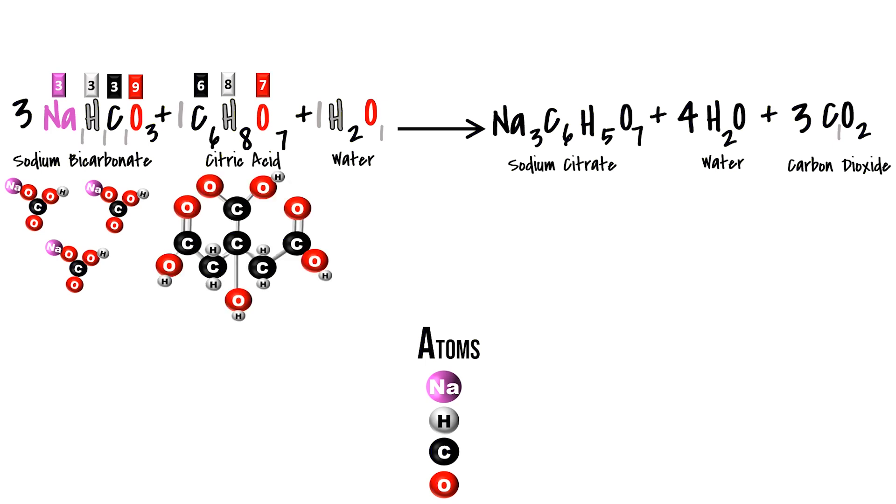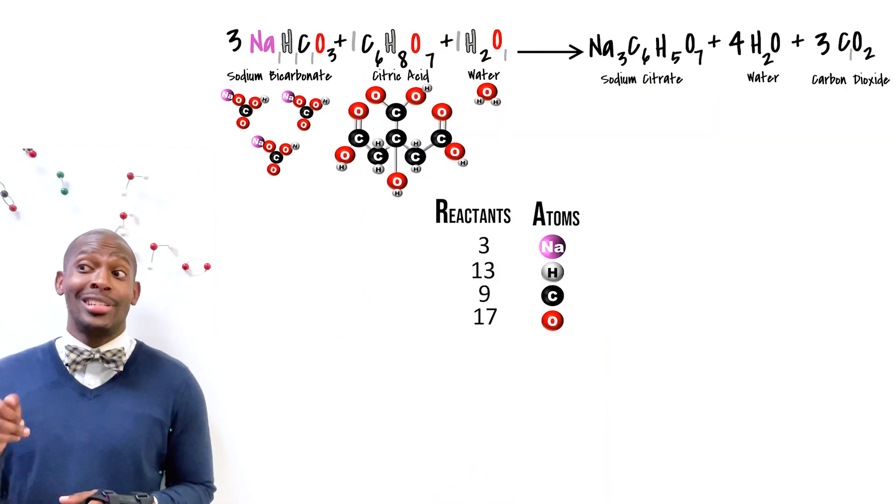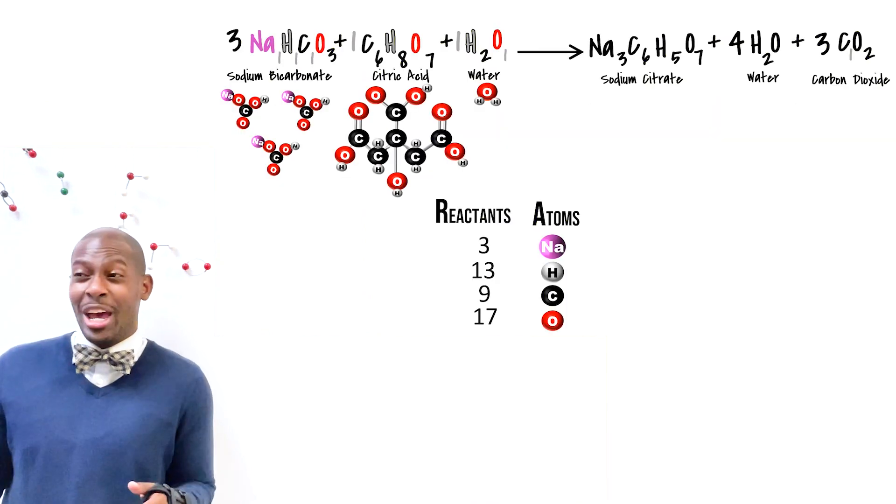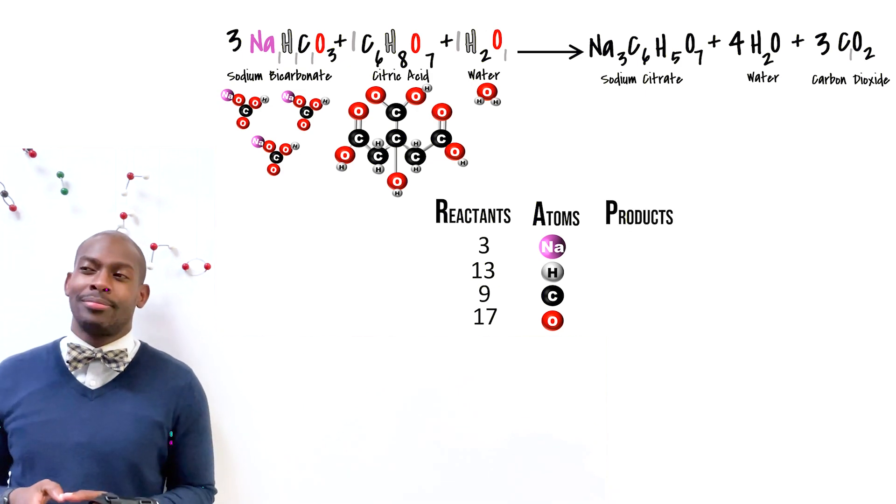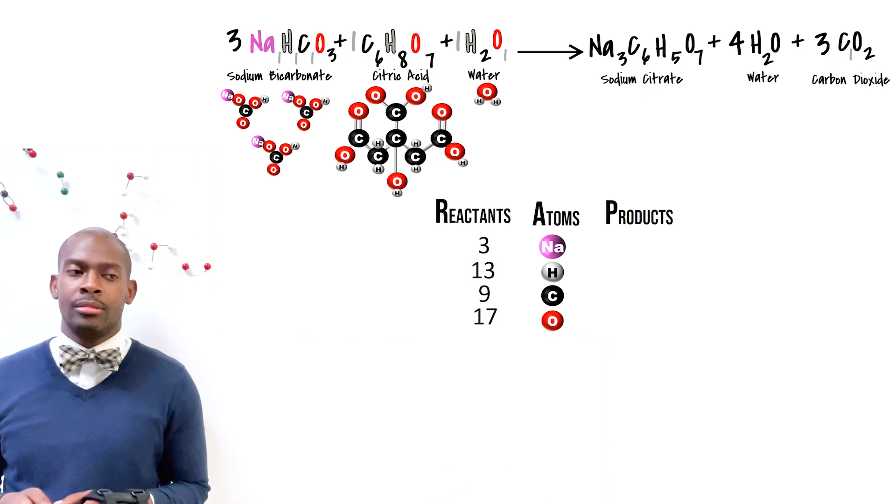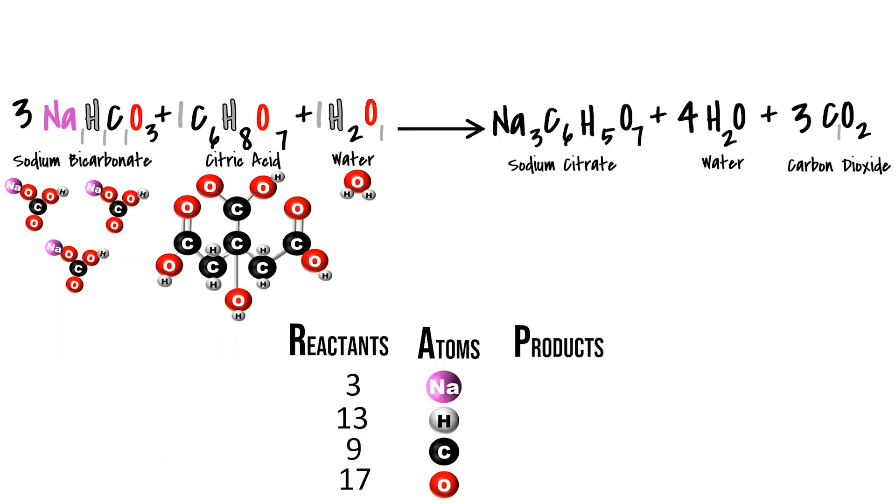We have six carbons, eight hydrogens, and seven oxygen atoms. And in this one water molecule we have two hydrogens and one oxygen, with a grand total of three sodium atoms, 13 hydrogen atoms, nine carbon atoms, and 17 oxygen atoms.